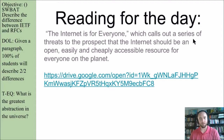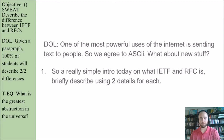Though our reading for the day is not that website, I definitely encourage you to check it out. Our reading, 'The Internet is for Everyone,' calls out a series of threats to the prospect that the internet should be an open, easy, and cheap resource for everyone on the planet. And DOL time: one of the most powerful uses of the internet is sending text to people, so we agreed to ASCII — what about the new stuff? A really simple intro today on what IETF and RFC are. I want you to briefly describe both of them using two details for each.